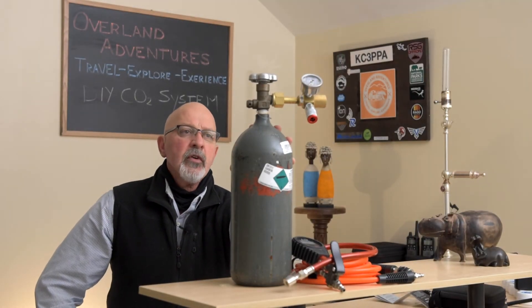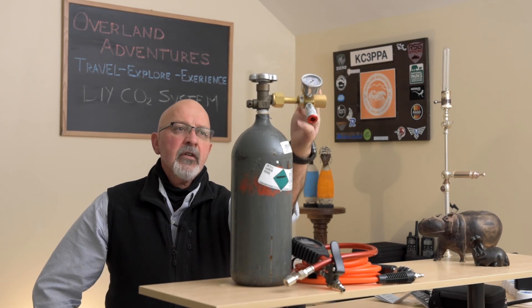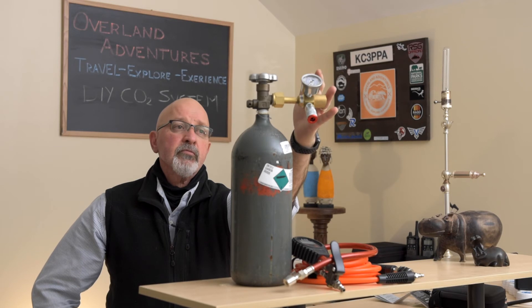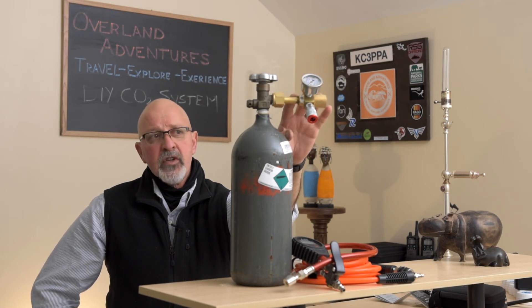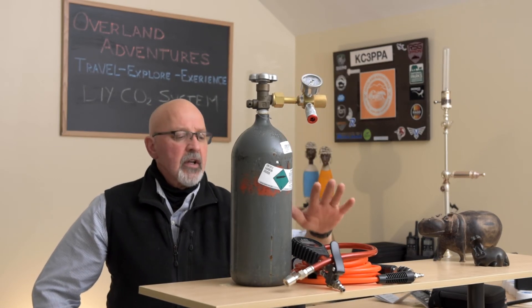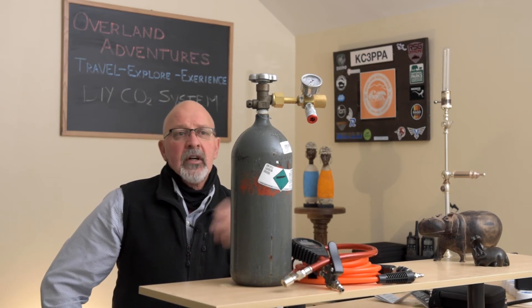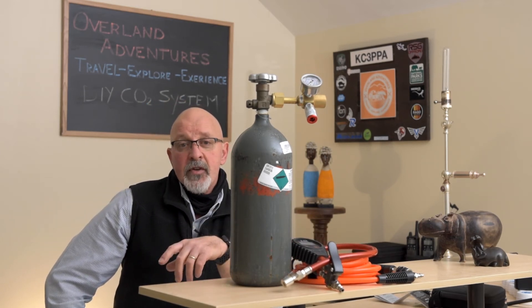So this is the complete unit. We basically just added the quick release or quick disconnect and pressure gauge to the regulator. Then we have our air hose and our tire inflator and that's it. That's your whole system pretty simple.